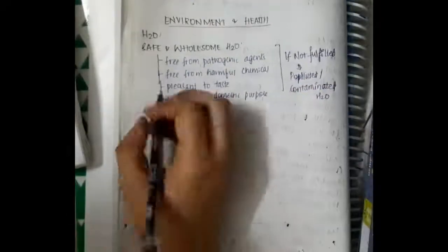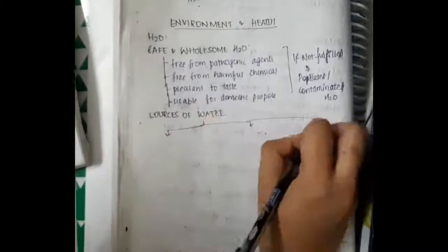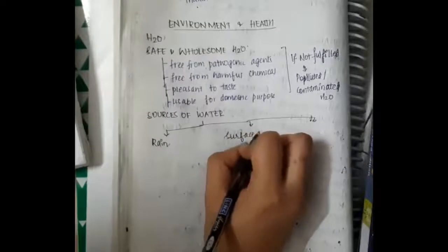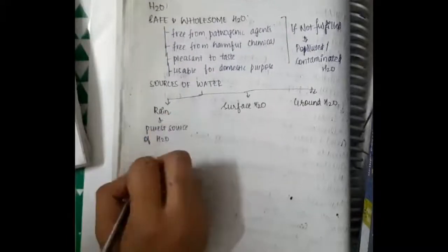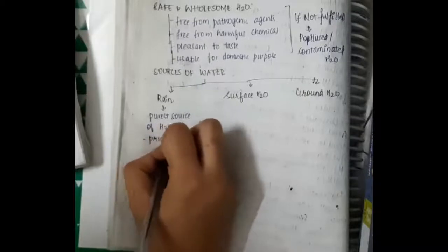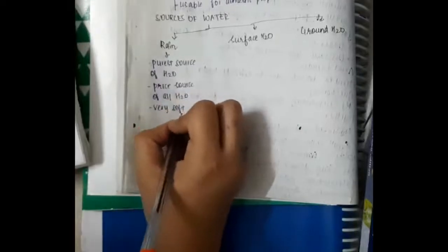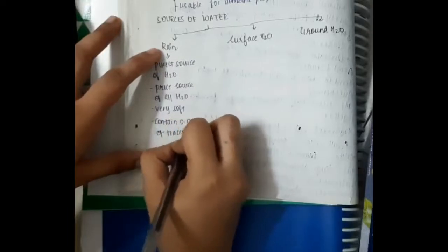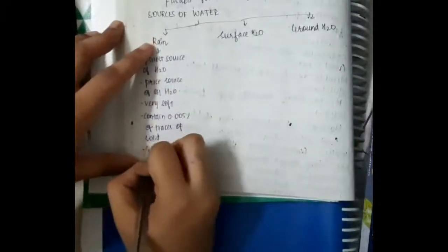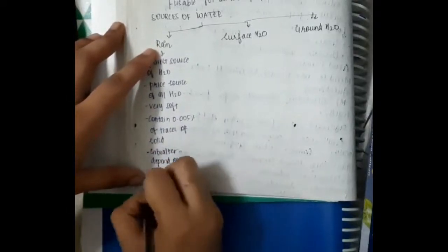The first source of water — we get water from rain water, surface water, and ground water. Rain water is the purest source of water. The primary source of all water is rain. The water which we get from rain is very soft water and this contains 0.005% traces of solids.